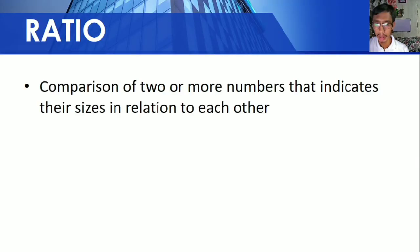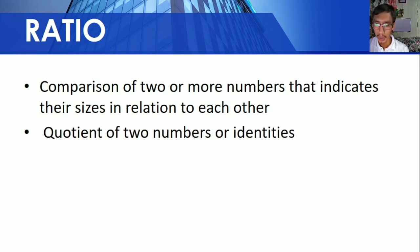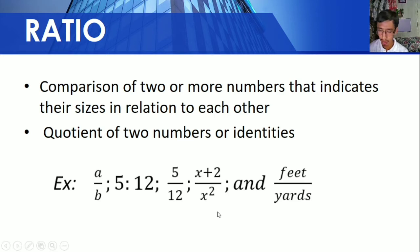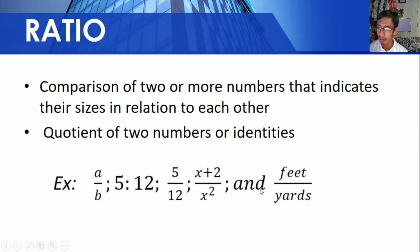So what is ratio? A comparison of two or more numbers that indicates their sizes in relation to each other. It is the quotient of two numbers or identities. Examples: A over B, the ratio of 5 is to 12 which can also be written as 5 over 12, X plus 2 over the square of X, and feet over yards.